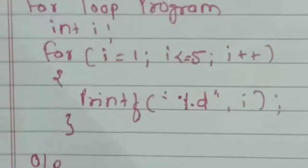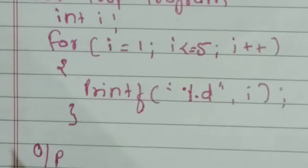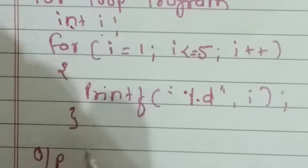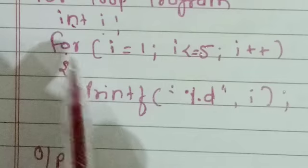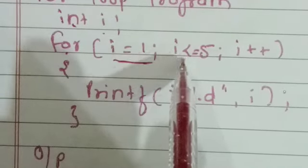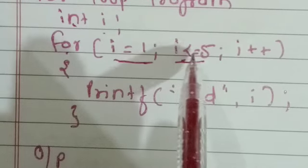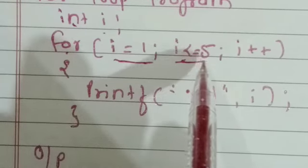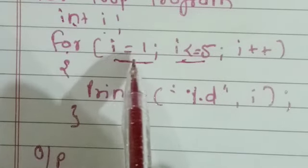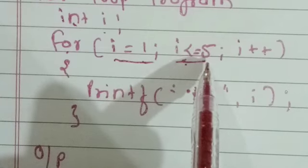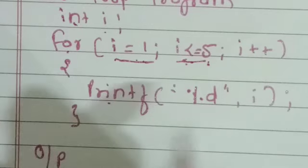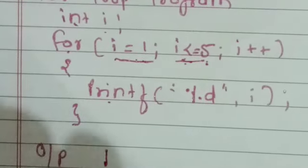This is the program for the for loop. We have taken one variable, int i. In the bracket, we assign the initial value 1. Then we check the condition: i less than or equals to 5, and i++. For the first iteration, the value of i is 1. Since 1 is less than or equal to 5, the condition is true, and the value 1 is printed.